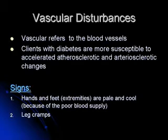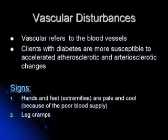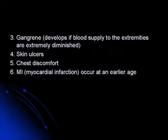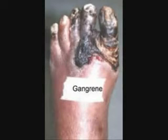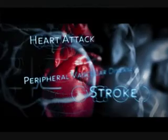Vascular disturbances refer to changes in blood vessels. Clients with diabetes are more susceptible to accelerated atherosclerotic and arteriosclerotic changes. The signs of vascular disturbances are: hands and feet or extremities that are pale and cool, leg cramps, gangrene, skin ulcers, chest discomfort, MI, or heart attack.